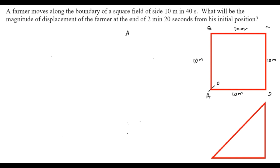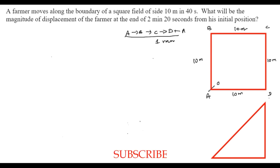From point A, the farmer goes from A to B, then B to C, then C to D, then D to A — that is equal to one round. For completing one round, he takes 40 seconds.